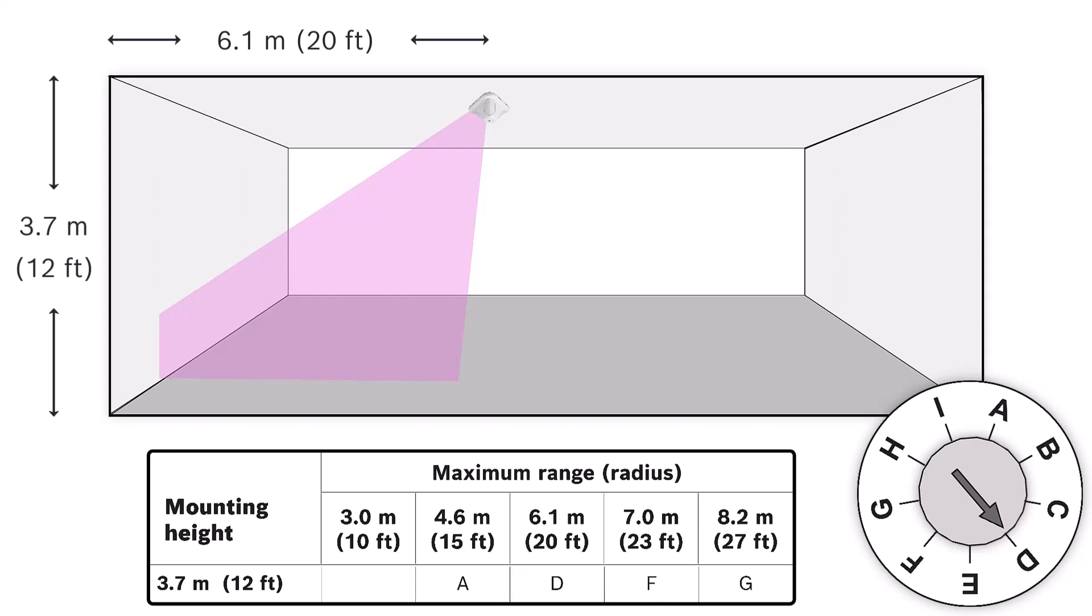The distance to the opposite wall is 7 meters (23 feet). We set this dial to letter F. For the third zone, the distance to the wall is 4.6 meters (15 feet). We turn the knob to letter A.